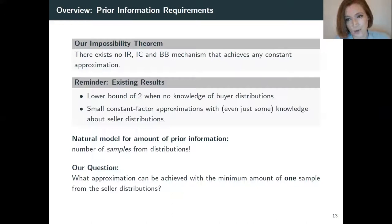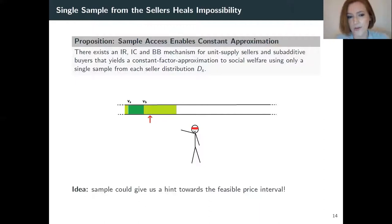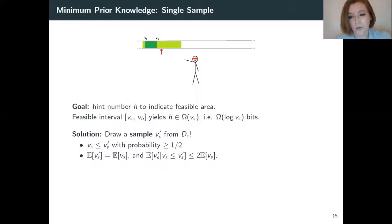With this model, we will also focus on having minimal prior information. So we will try to make this work with just one sample. And we will try to make this work with just one sample from one side, i.e. the sellers. The proposition here is that this is enough to heal our impossibility from before, which was based on not knowing the price interval. So for it to work, the sample would have to serve as a hint to find this price interval. And we know that such a hint would have certain properties. So it needs to be at least a number that is similarly big as VS, right? And it should not be too far away from VS. And these two things are true for a sample from the distribution DS for these reasons.